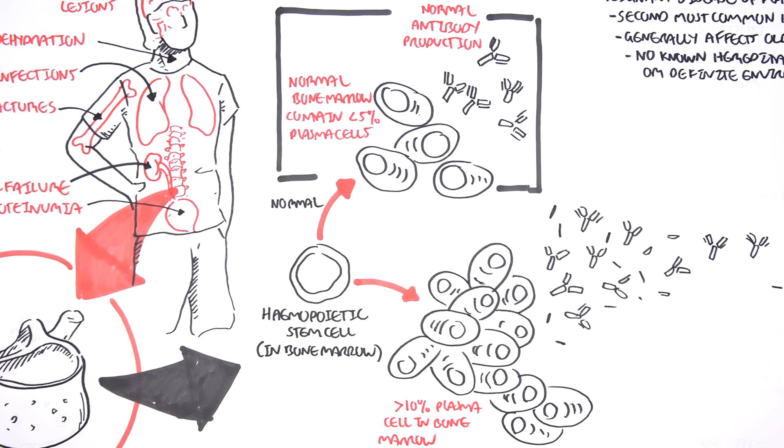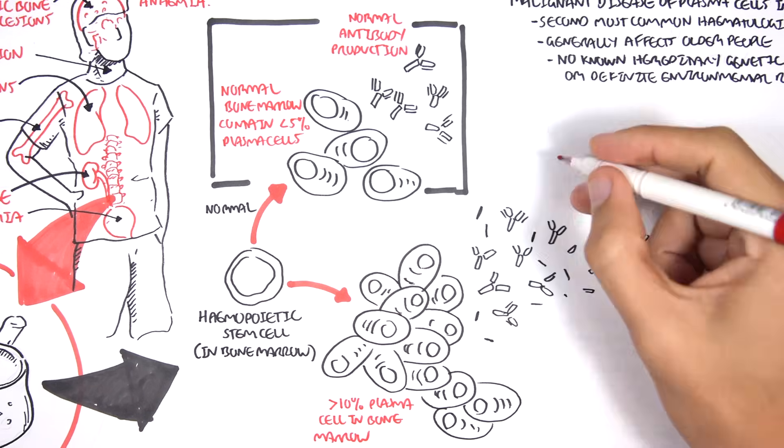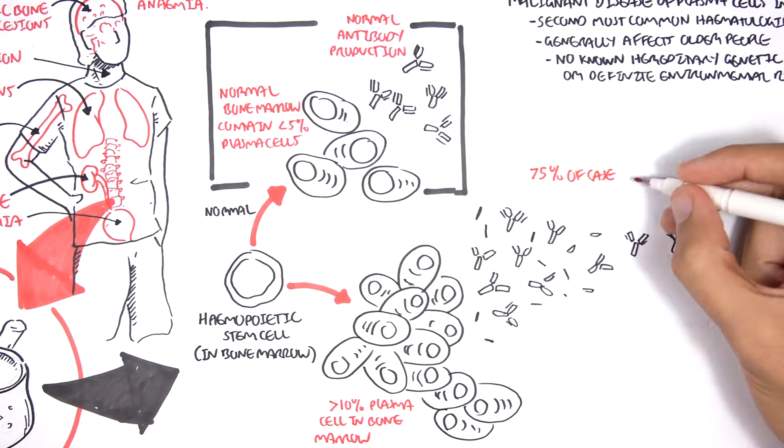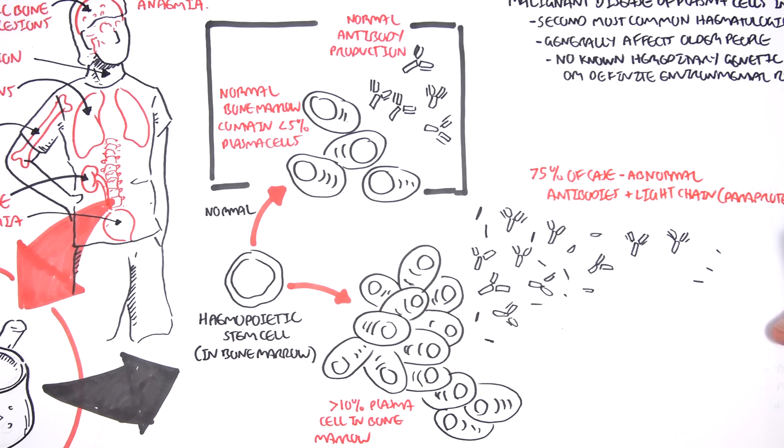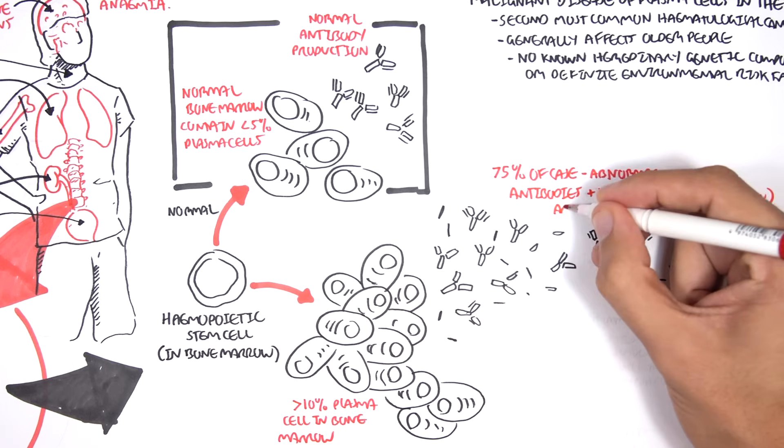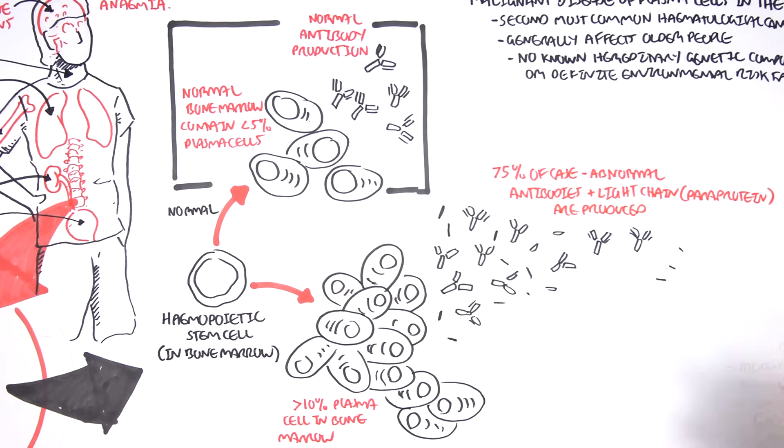In 75% of multiple myeloma cases, the antibodies are abnormally produced in high amounts. And plasma cells also produce just light chains. So they produce abnormal antibodies and they produce light chains only. And these light chains only that are being produced are called the paraproteins.